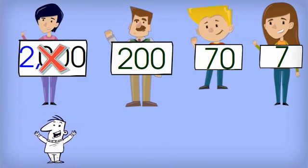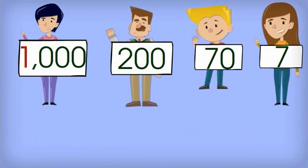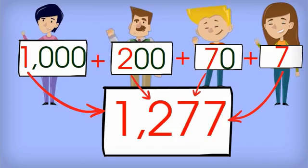And Thelma pays Bill one thousand dollars, leaving her with another one thousand dollars. One thousand plus two hundred plus seventy plus seven is equal to one thousand two hundred seventy seven.